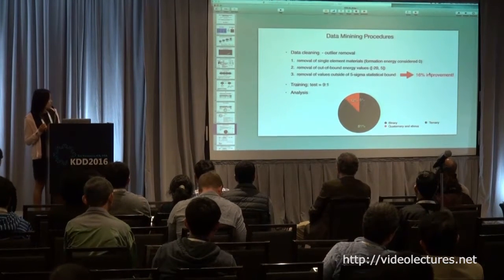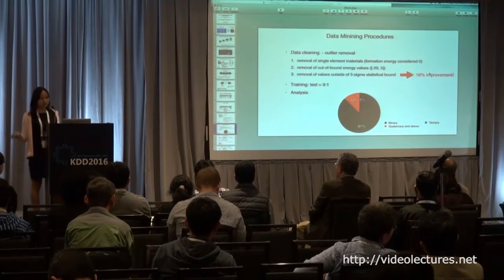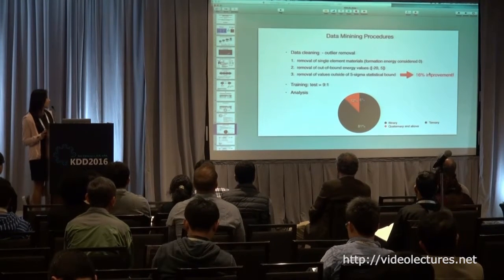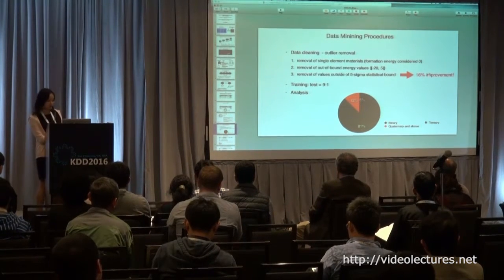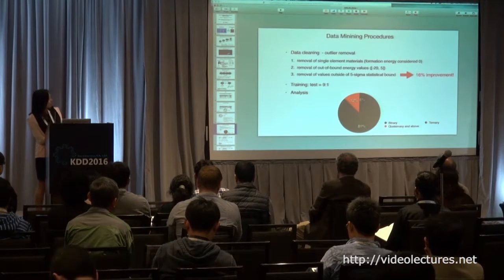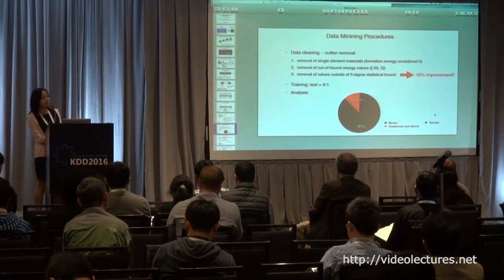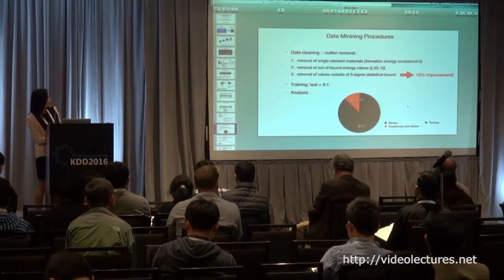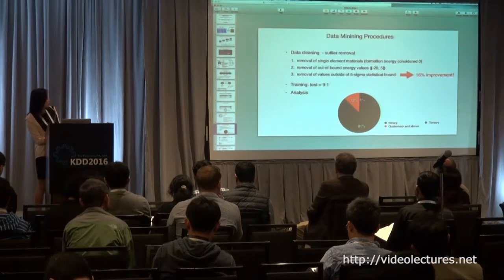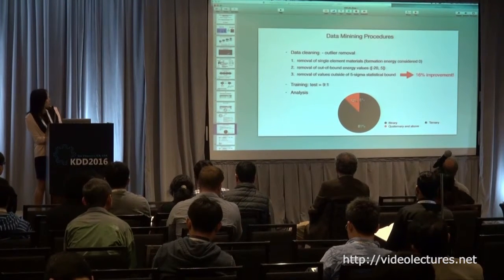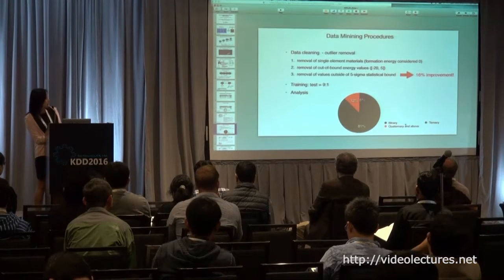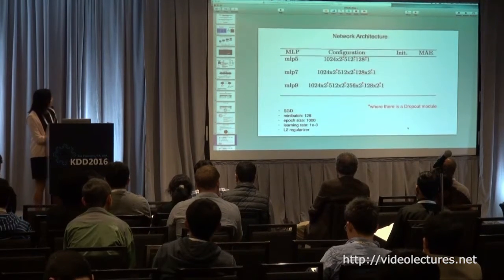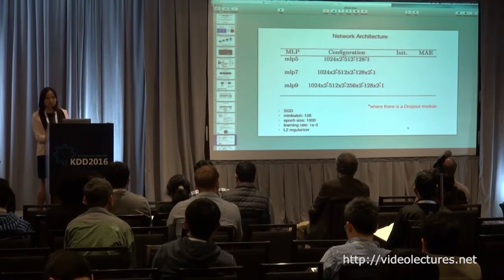We split the dataset into 90% training and 10% test. Most of the data are ternaries — three elements forming a compound — with about 6% binaries and 12% quaternaries and above.